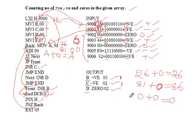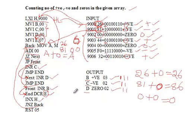This process continues for all seven inputs. At the end, B holds 03 because there are three positive numbers, C holds 02 because there are two negative numbers, and D holds 02 because there are two zeros. That is how we make the counting of positive, negative, and zeros in a given array using 8085 microprocessor assembly language.